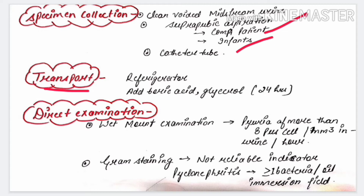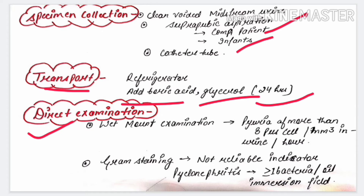For transport, the specimen can be stored in the refrigerator, or preserved by adding boric acid and glycerol to the sample for up to 24 hours. In direct examination, one can perform wet mount examination, leukocyte esterase test, nitrate reduction test, and Gram staining.